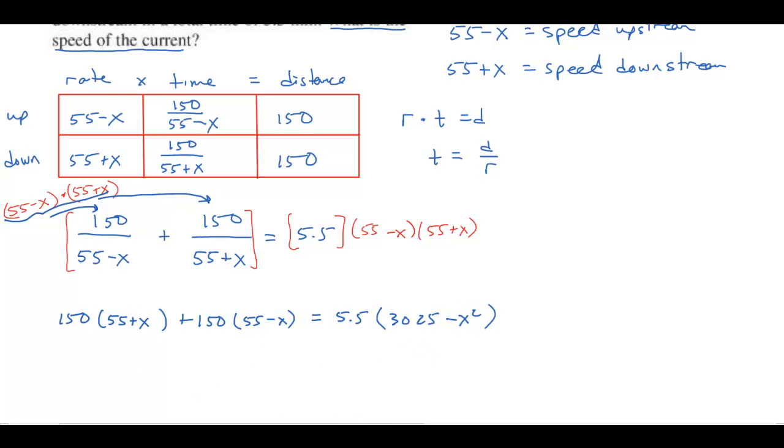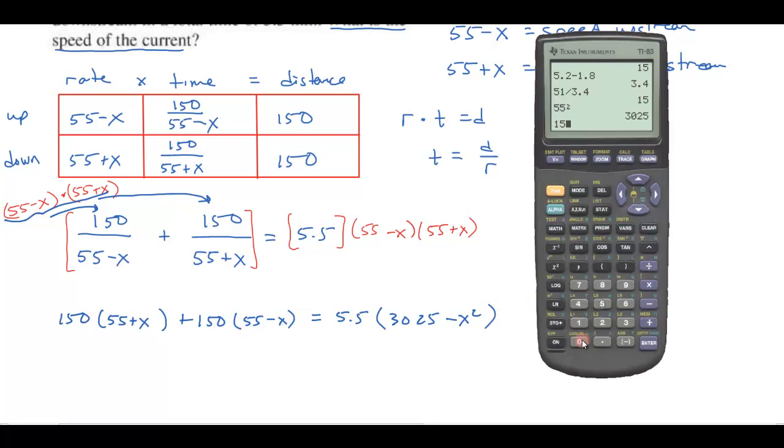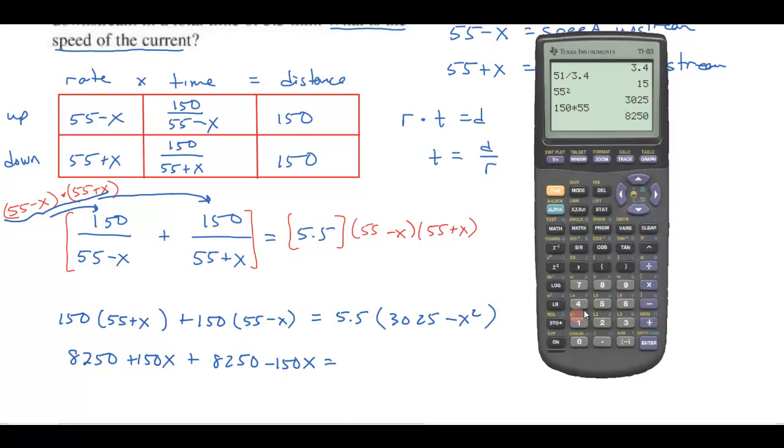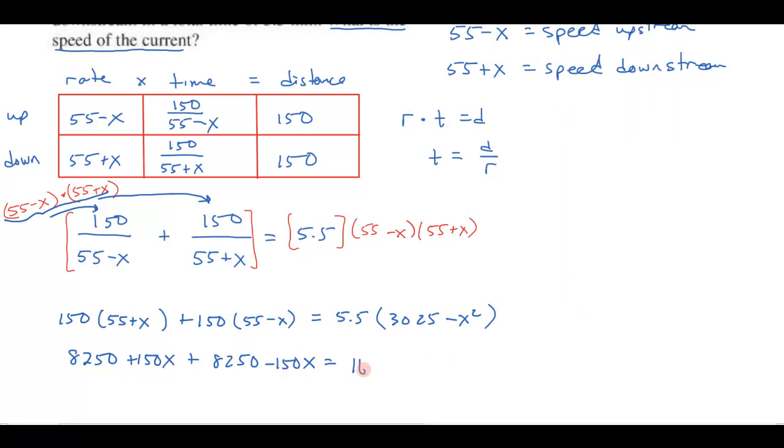Let's go ahead and distribute. 150 times 55 gives me 8,250. So I get 8,250 plus 150x. This is the same, 8,250 minus 150x. Over here I'm going to get 5.5 times 3,025. That gives me 16,637.5 minus 5.5x squared.